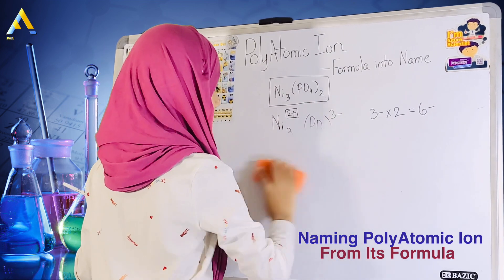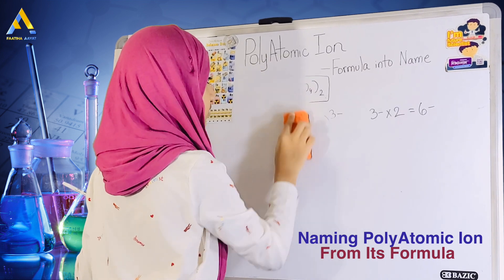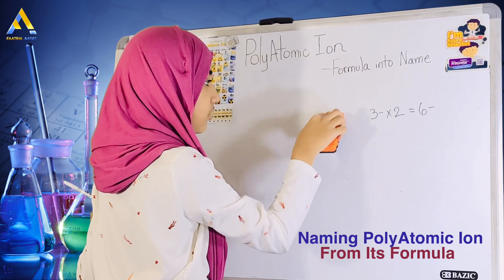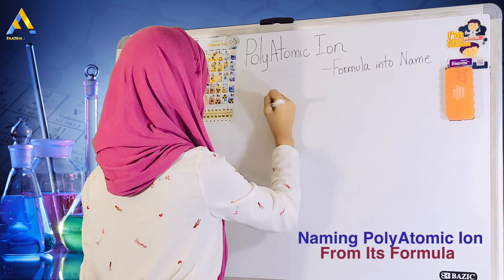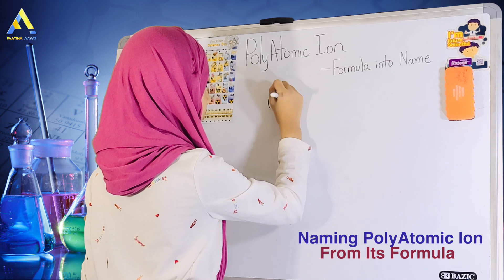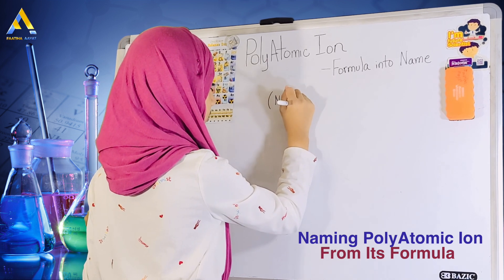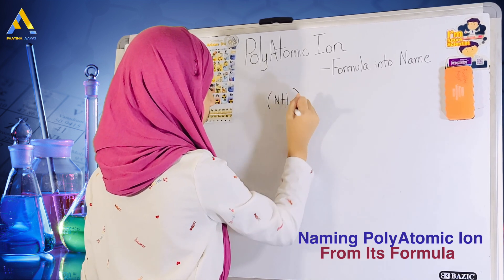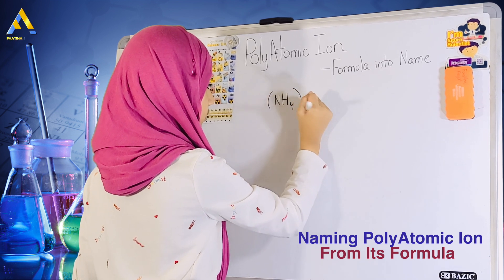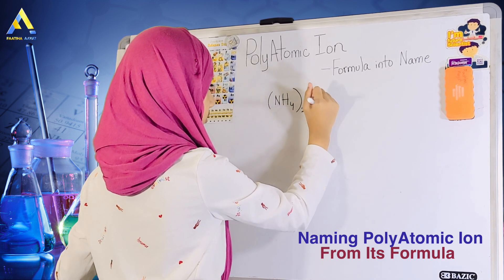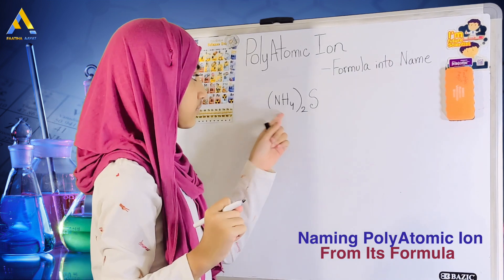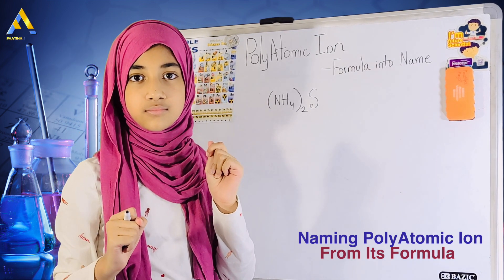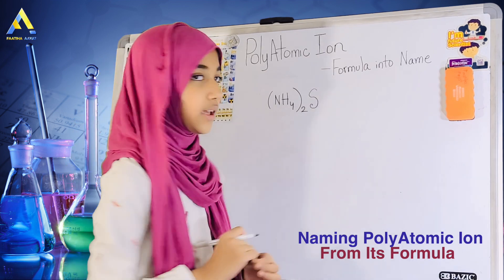Let me erase the board. Since I should not tell you the name, I'm giving you exact thing how to write. So, bracket start. NH4 bracket close superscript 2 S. So, this is the formula given to you. Name it. And if you want to know anything's charge, let me know that.